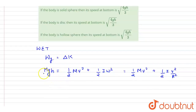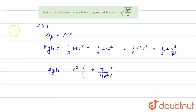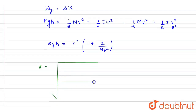Multiplying through by 2 and dividing by m, we get 2gh equals v squared times (1 plus I by mr squared). Therefore, the final expression for velocity is: v equals the square root of 2gh divided by (1 plus I by mr squared).